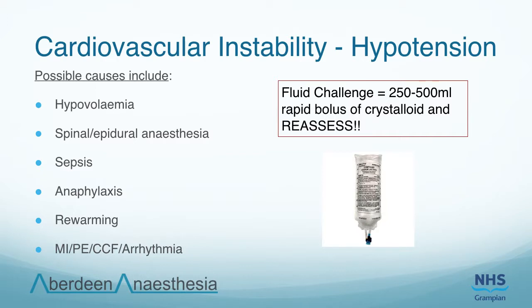Another cause of post-operative hypotension is subarachnoid or epidural anaesthesia. This causes sympathetic block resulting in vasodilatation and therefore reduced systemic vascular resistance. Many patients can compensate for this, however if they are hypovolemic or the block is above T4 level, severe hypotension with or without bradycardia may occur. The comprehensive management of patients with epidurals is beyond the scope of this tutorial, however it is a significant cause of post-operative hypotension to be aware of. If the patient has a profound drop in blood pressure or evidence of compromise, you should stop the infusion, contact the anaesthetist and give an IV fluid bolus.